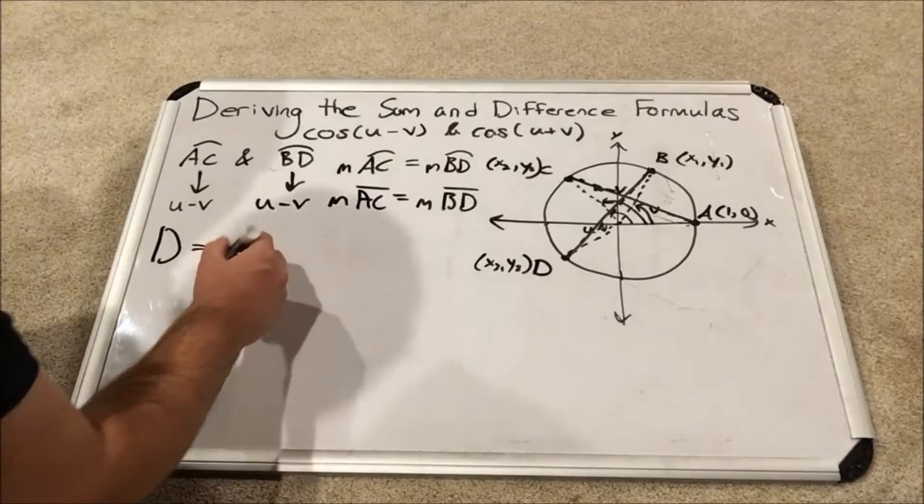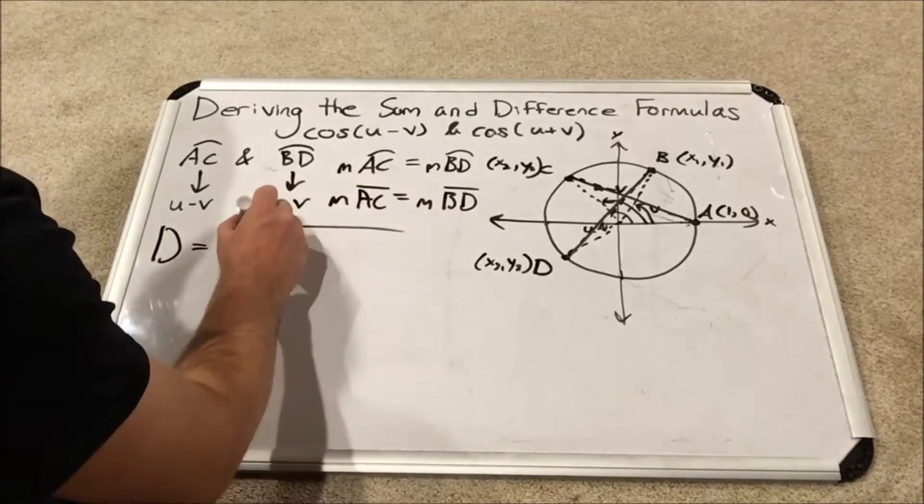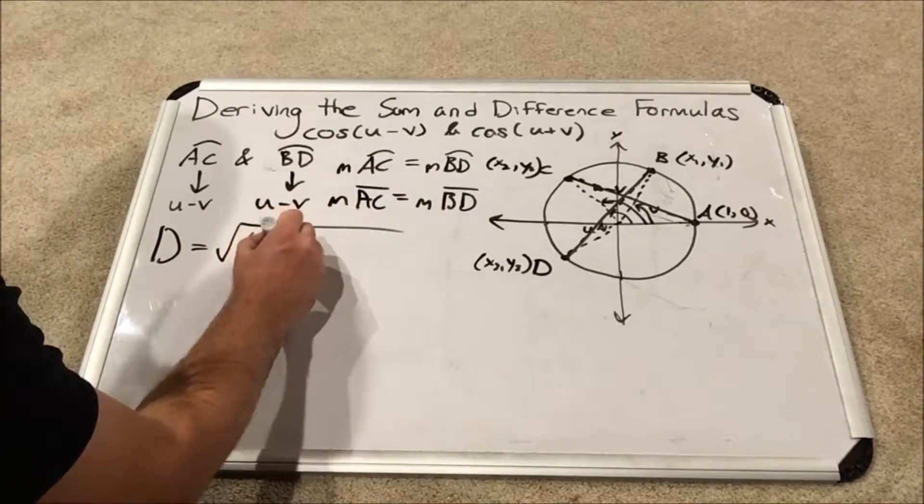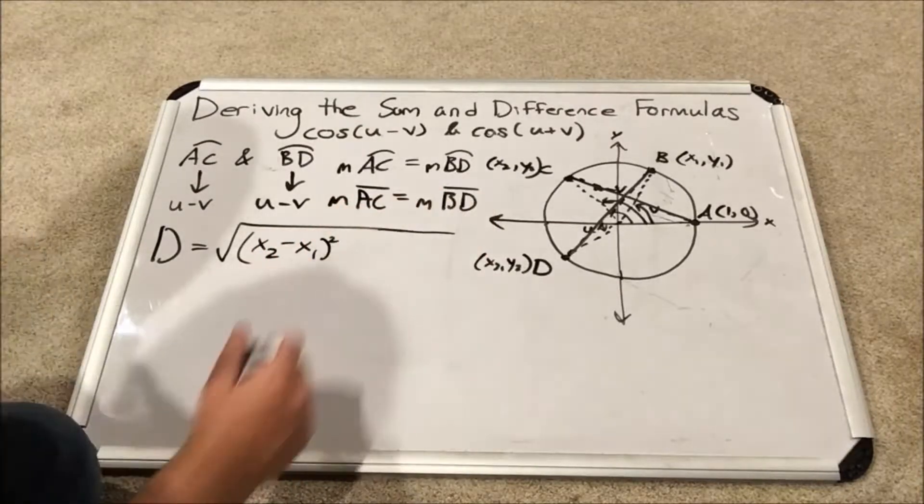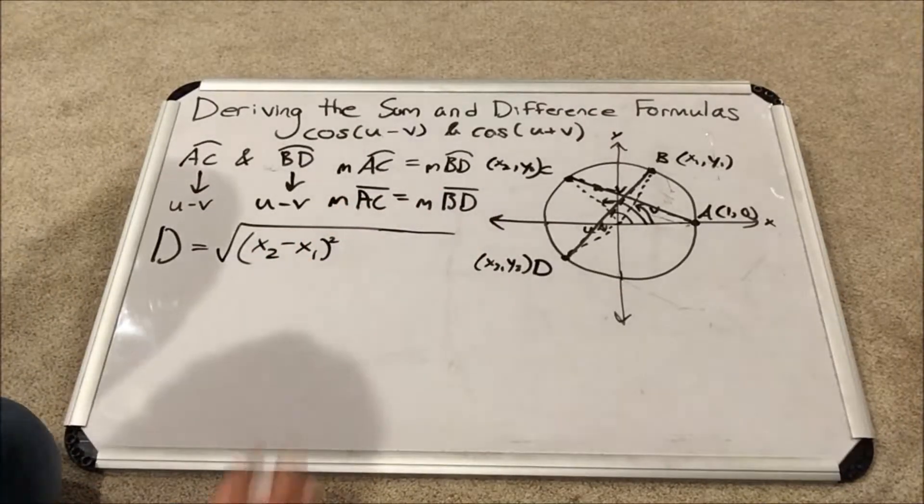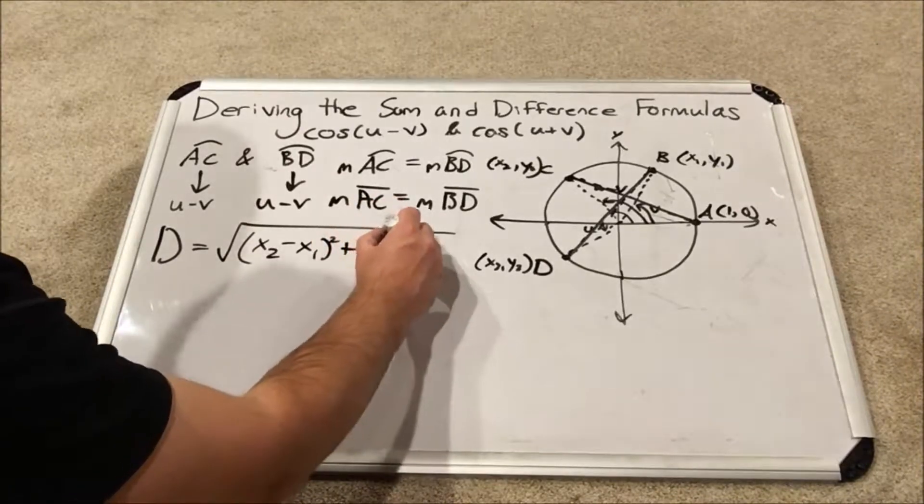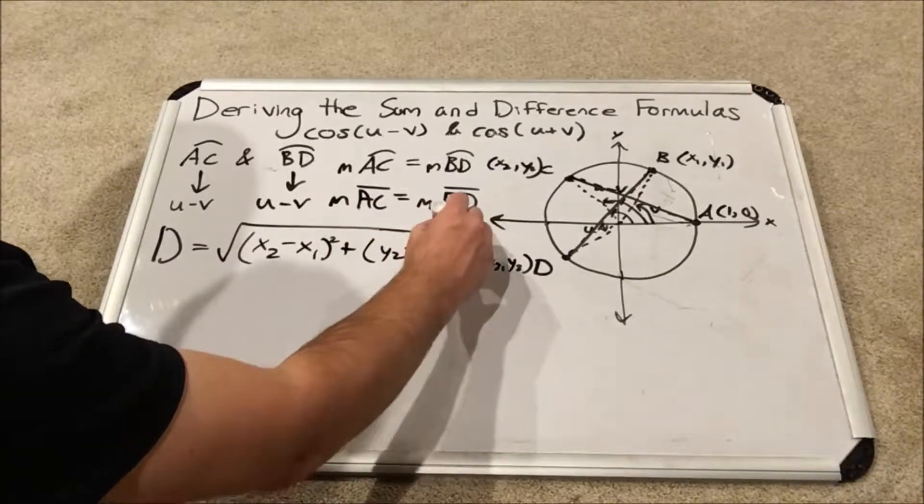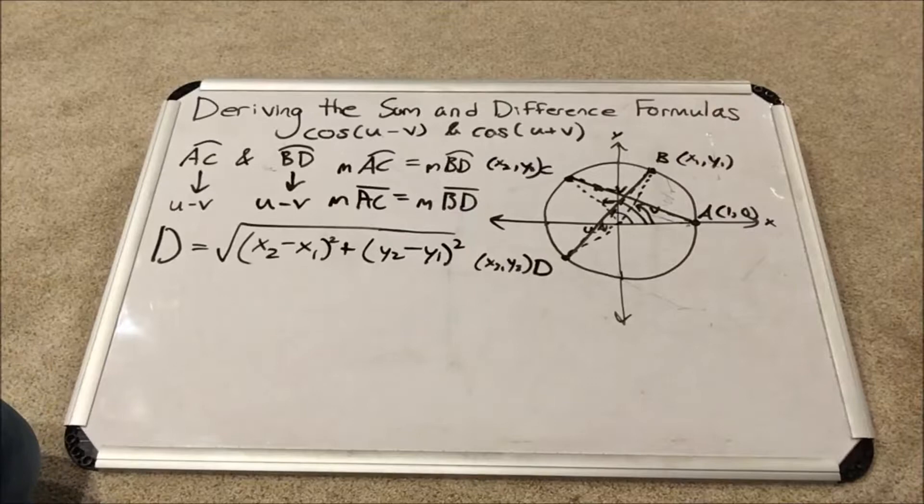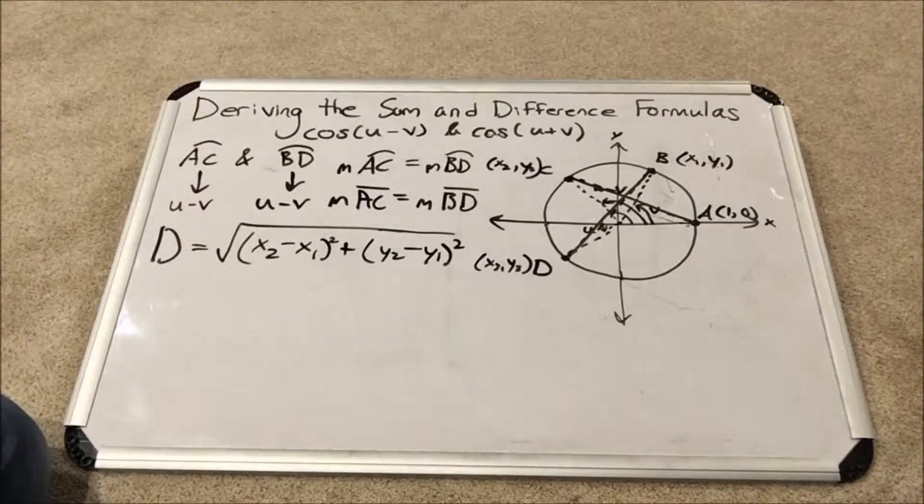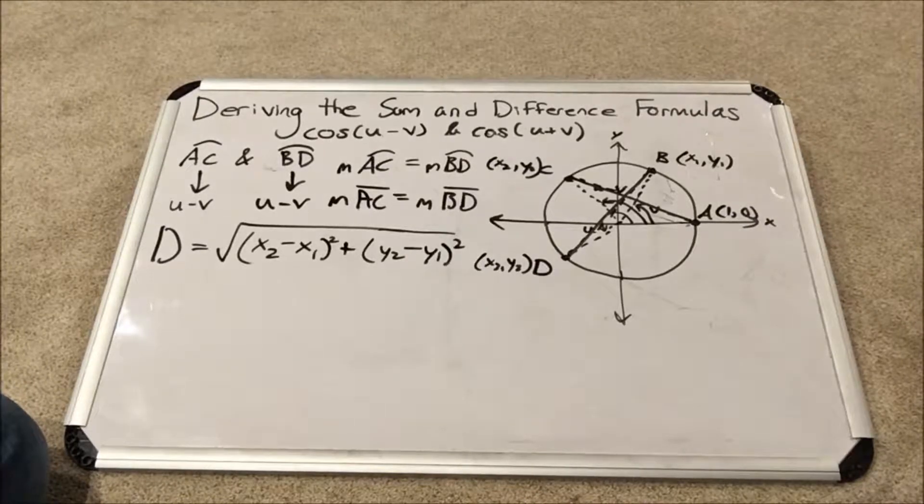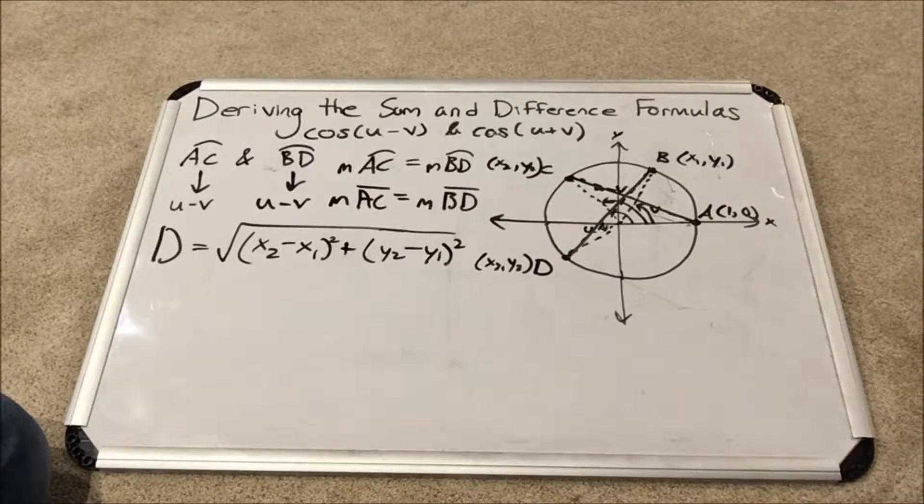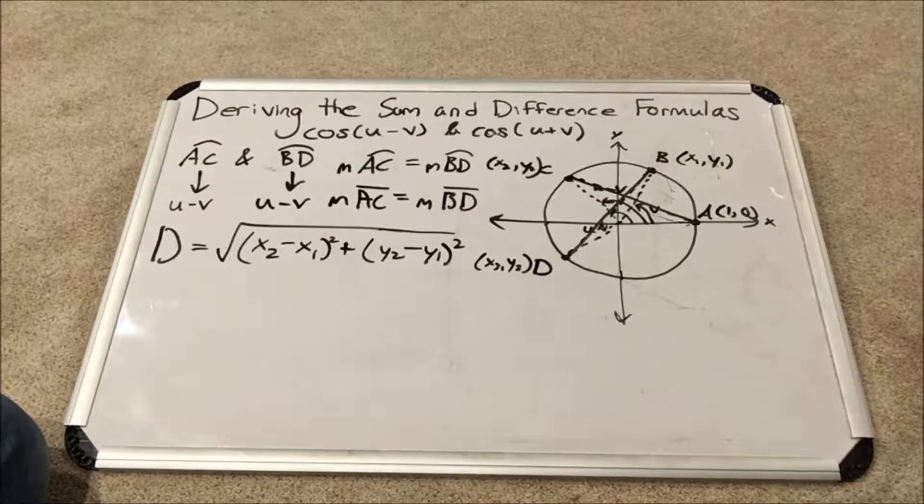Recall that the distance formula in general takes the square root of the difference in the x values of the two points in question at the ends of your line segment, squared. And you add to that the difference in the y coordinates squared. This is a use of the Pythagorean theorem. Now we are going to apply the distance formula to our two chords.